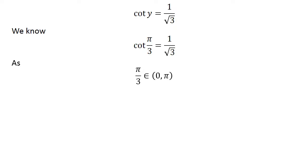As pi upon 3 lies in the open interval of 0 and pi, so pi upon 3 is the principal value of inverse of cotangent of 1 upon square root of 3.